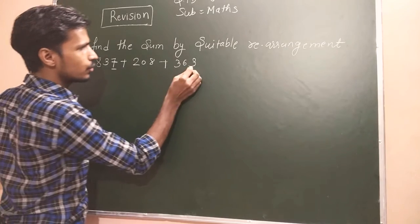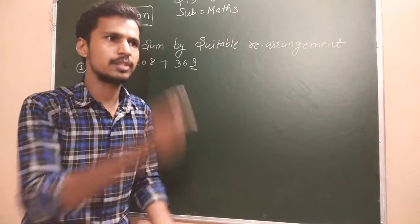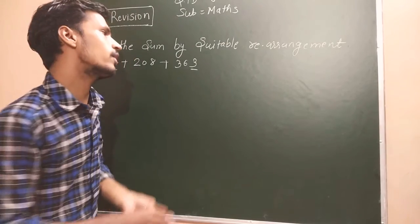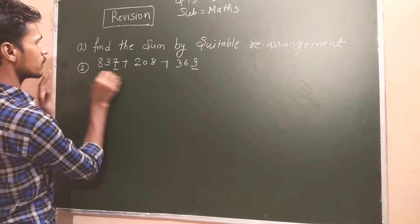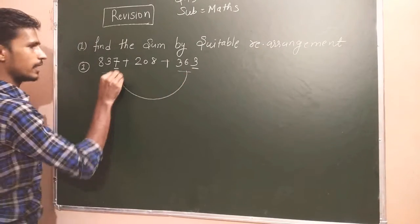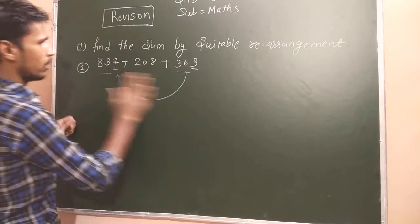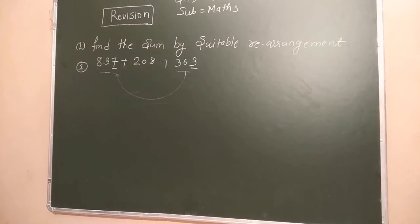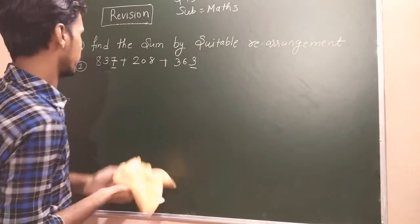Unit value where is 10? Unit value 7, unit value 3. 7 plus 3 will become 10, means unit value 0. So we will arrange this value near to this value, past each other. Let's start.